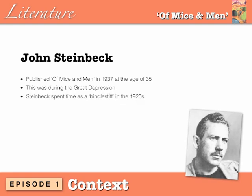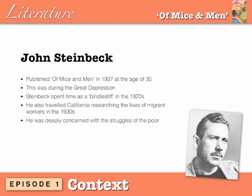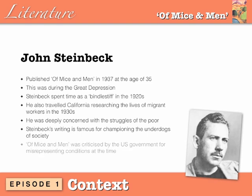Steinbeck spent time as a bindle stiff in the 1920s and also travelled California researching the lives of migrant workers in the 1930s. He became deeply concerned with the struggles of the poor, especially migrant workers. His writing is famous for championing the underdogs of society — those who are disadvantaged or oppressed. Of Mice and Men was criticised by the US government on its release for misrepresenting conditions faced by migrant workers, but it was critically acclaimed and very popular.